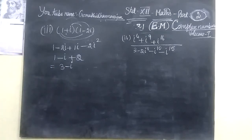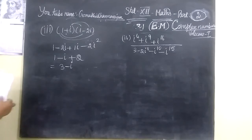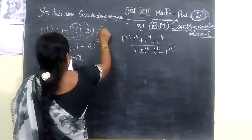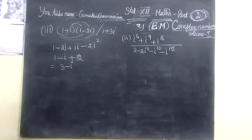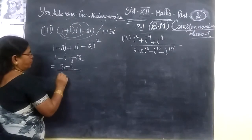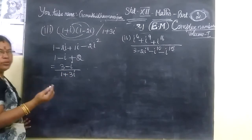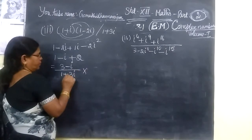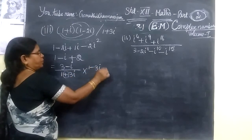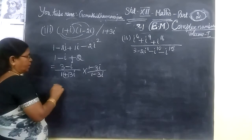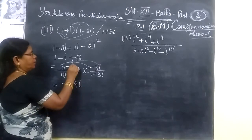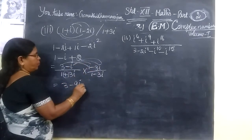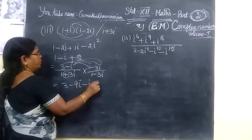Now we see the third question answer. The question — in this case the denominator will be 1 plus 3i. So usually we are taking the conjugate. Conjugate means plus becomes minus. You are taking 1 minus 3i over 1 minus 3i. Multiply by 3: 3 minus 9i. Then multiply by i: minus 5. Here, minus minus is plus.